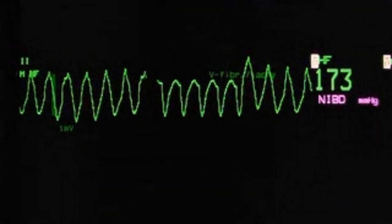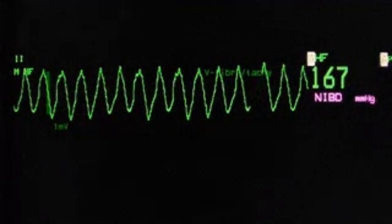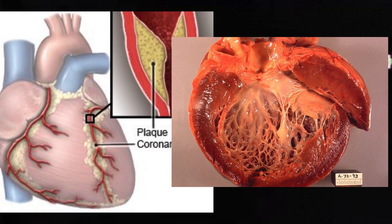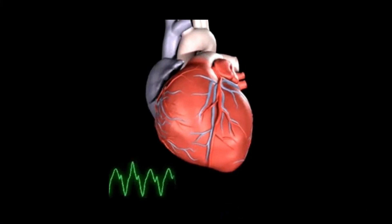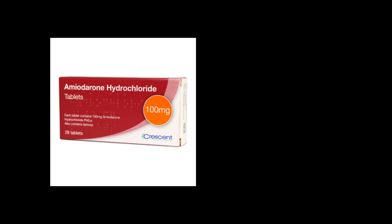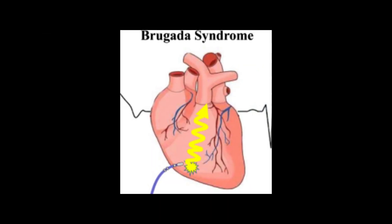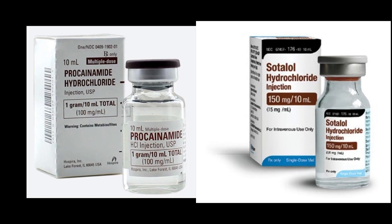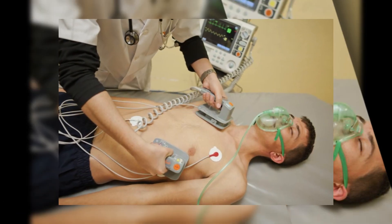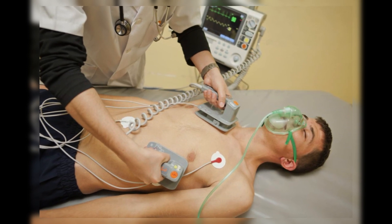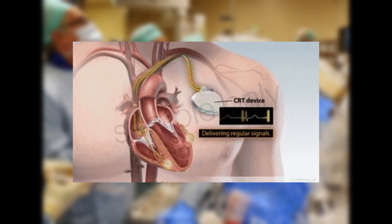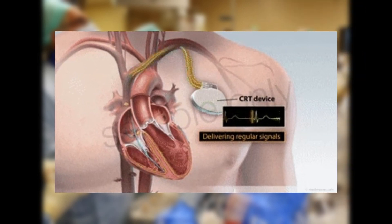VT can occur in people with pre-existing heart disease, such as coronary artery disease, cardiomyopathy, or heart failure. It can also occur in people without any known heart problems. Certain medications, electrolyte imbalances, and other factors can increase the risk of developing VT. Treatment may include medications to slow the heart rate and stabilize the heart rhythm, as well as procedures such as cardioversion, where an electric shock is used to restore a normal heart rhythm. In some cases, an implantable cardioverter defibrillator may be necessary to prevent sudden cardiac arrest.